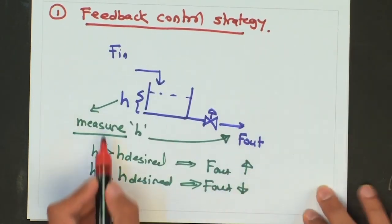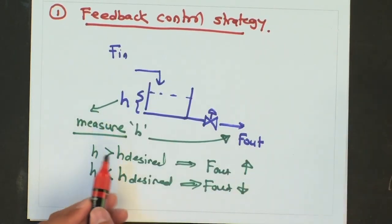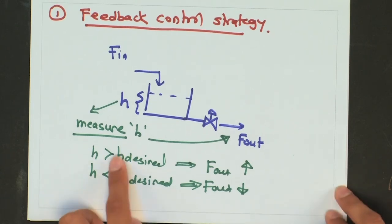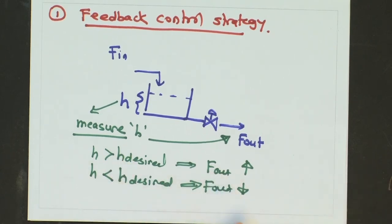This type of control strategy is known as a feedback control strategy. Because we are taking feedback from the system — we are trying to learn where the system is at, and depending on what the system requires, we are taking an action.